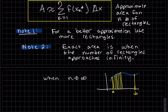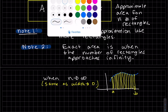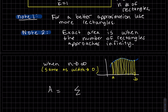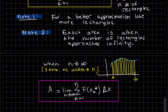As n approaches infinity, the width of each rectangle approaches zero — there will be no spaces between the rectangles. So the exact area formula is the limit as n approaches infinity of the sum from k equals 1 to n of f(x_k*) times delta x. That gives the exact area under the curve from a to b when f is greater than zero.